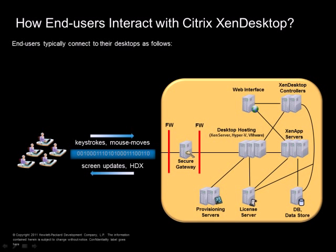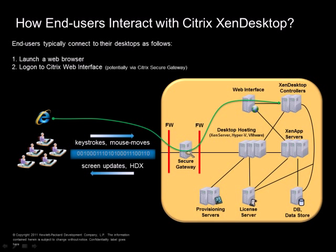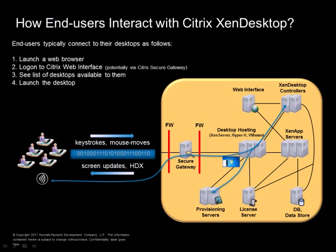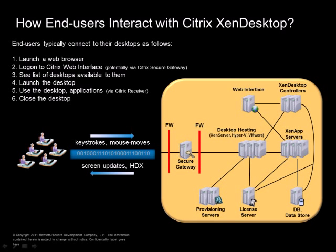So how do end users connect to their virtual desktops? First they launch a web browser and log on to Citrix web interface, potentially via Citrix Secure Gateway. Then they are given a list of desktops available to them. In the next stage they select the desktop they want to launch and use the desktops and possibly also applications installed either locally in the desktop or via XenApp servers. At the end they close the desktop.